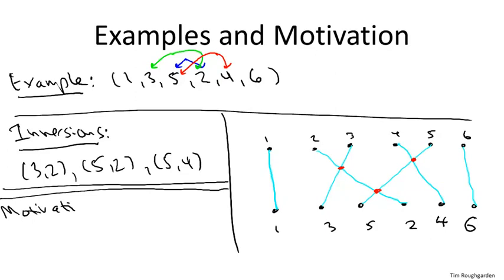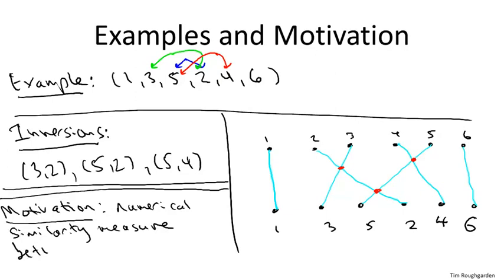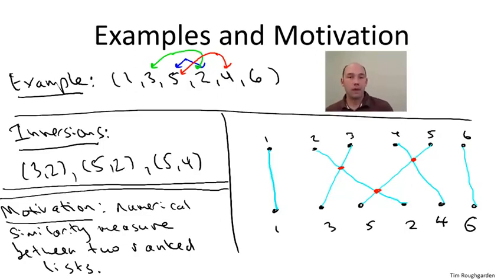Now, why might you want to solve this problem? You might ask. Well, there's a few reasons it comes up, but one would be to have a numerical similarity measure that quantifies how close two different ranked lists are to each other. So for example, suppose I took you and a friend, and I took, identified ten movies that both of you had seen. And I asked each of you to order to rank these movies from your most favorite to your least favorite. Now I can form an array and compute inversions, and it quantifies in some sense how dissimilar your two rankings are to each other.